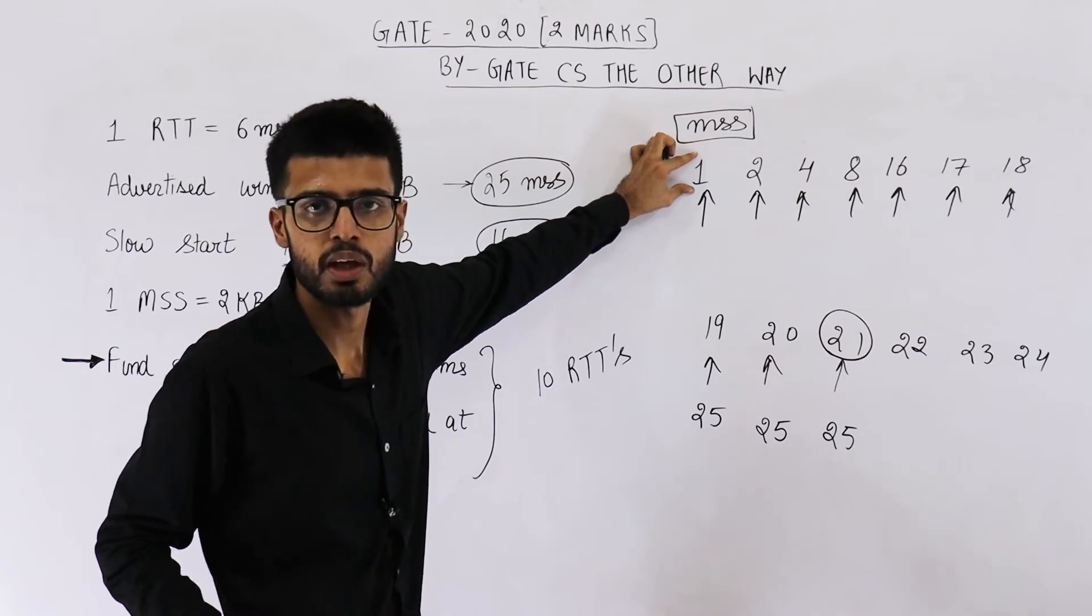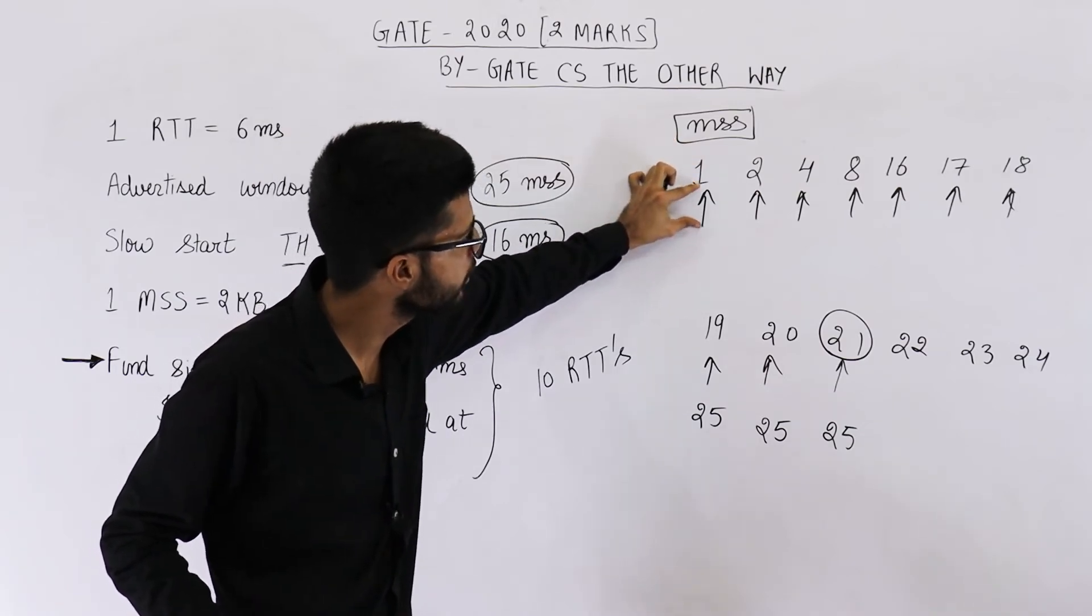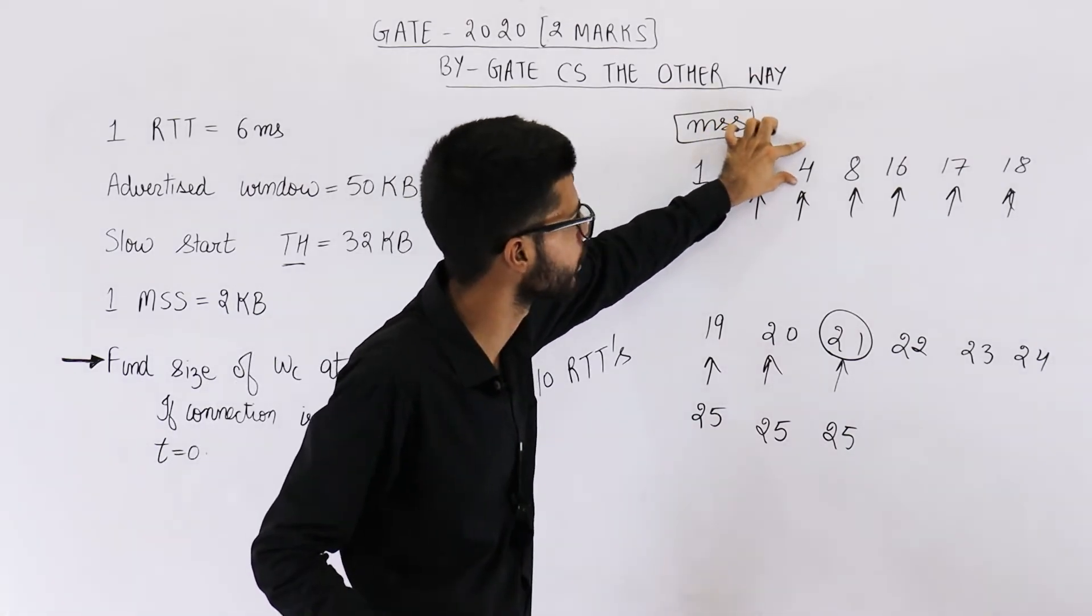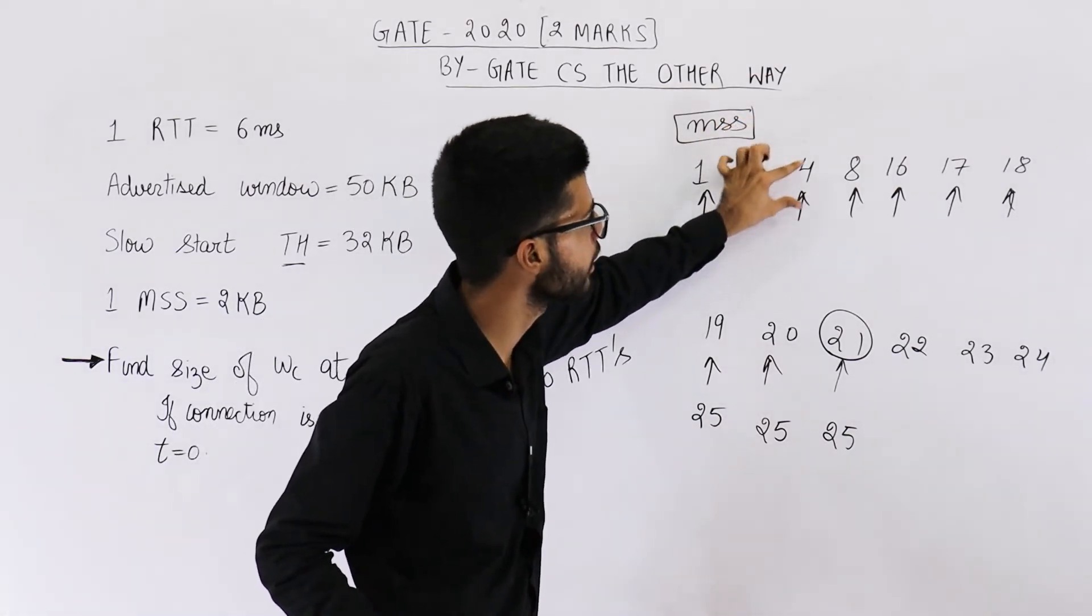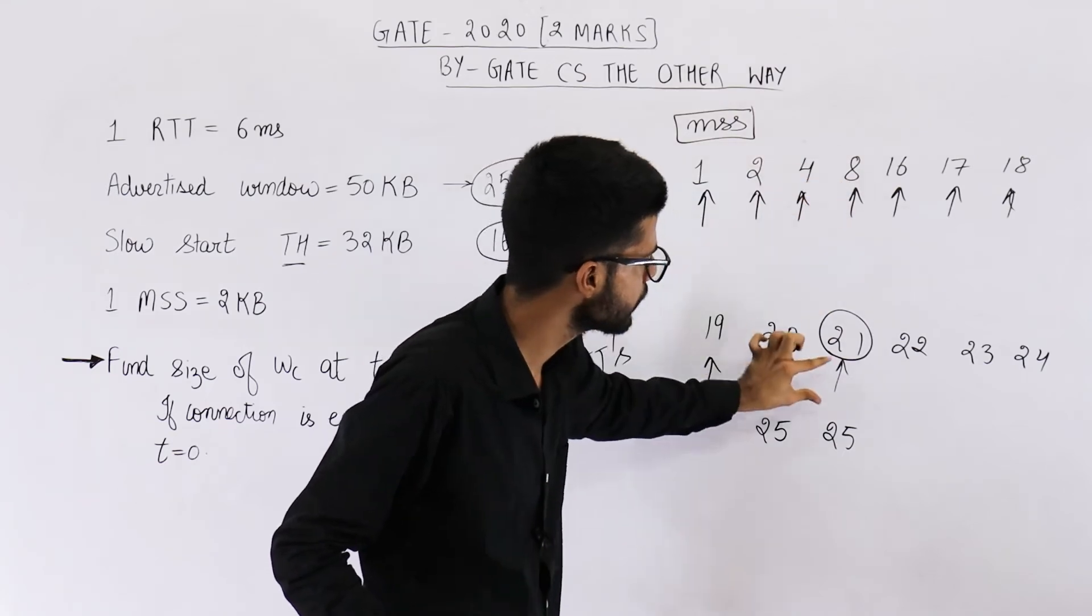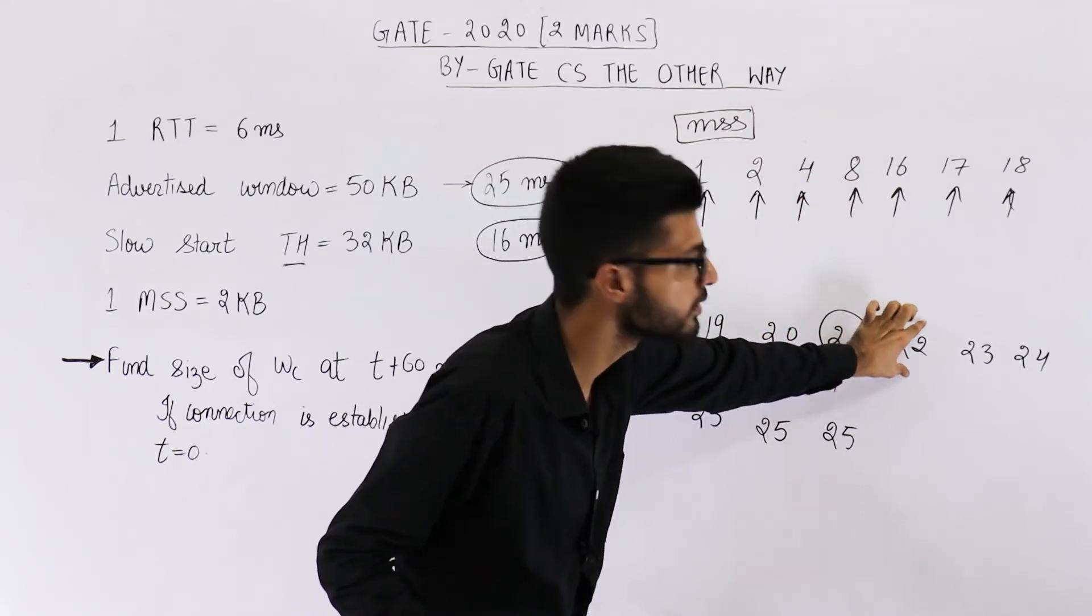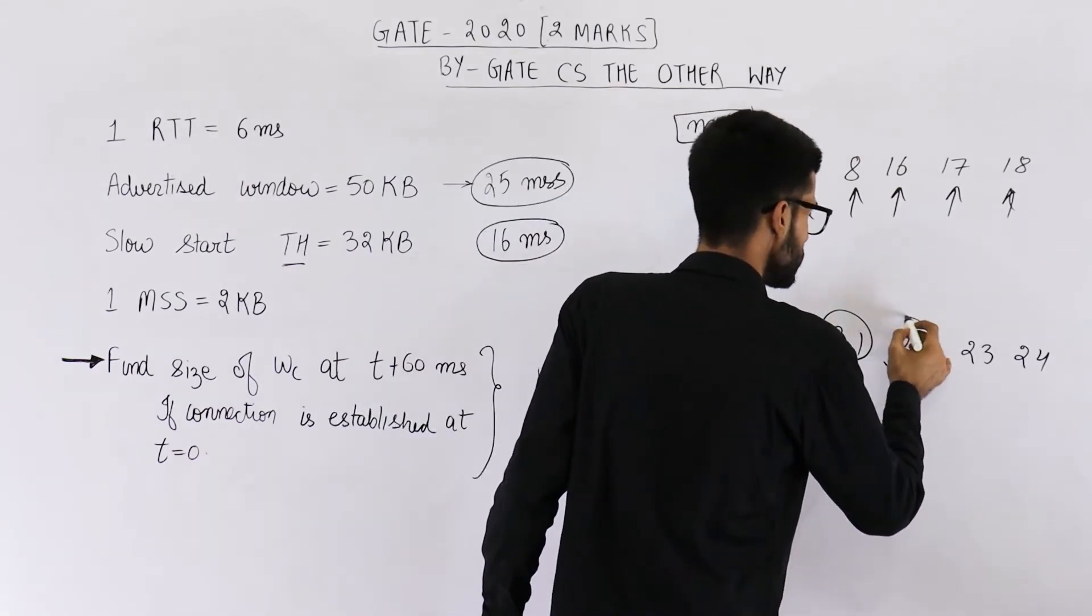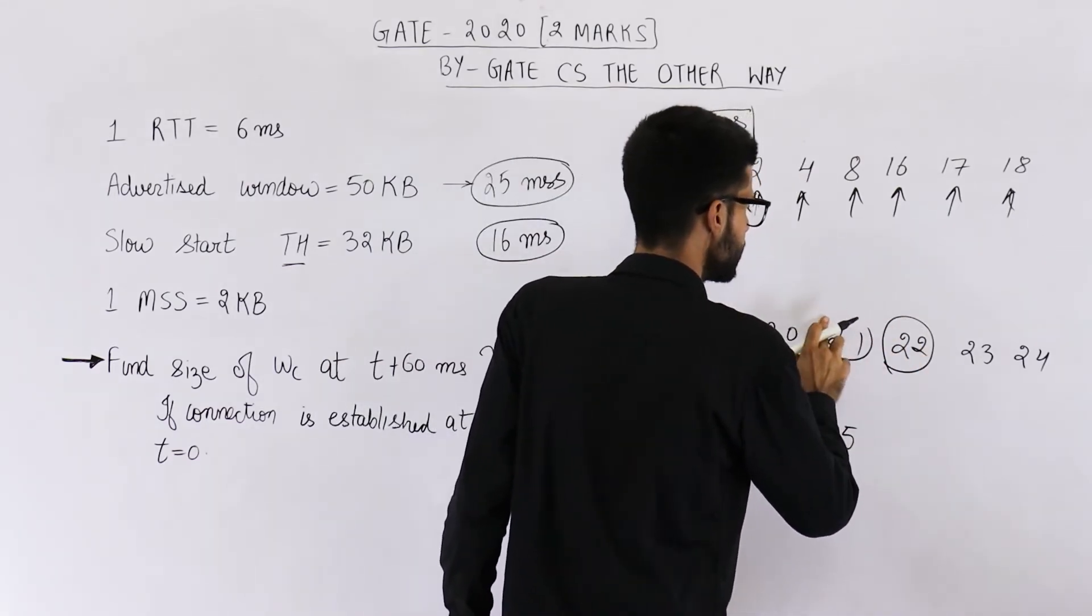See, initially the size is 1. After first RTT, the size will become 2. After second RTT, the size will be 4. After third RTT, size is 8. Similarly, after 10th RTT, the size is 22. So just be careful. This will be the size after 10th RTT.